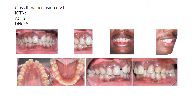In this case, the molar relationship is Class 2. In this picture it looks like Class 1 because of the angle, but if you take a picture exactly at the right angle you can see it's bilaterally a Class 2 case with deep bite and protruded incisors. So it's Class 2, Division 1 malocclusion, and the IOTN index picture resembles picture 5 of the AC component, and the dental health component is 5I.